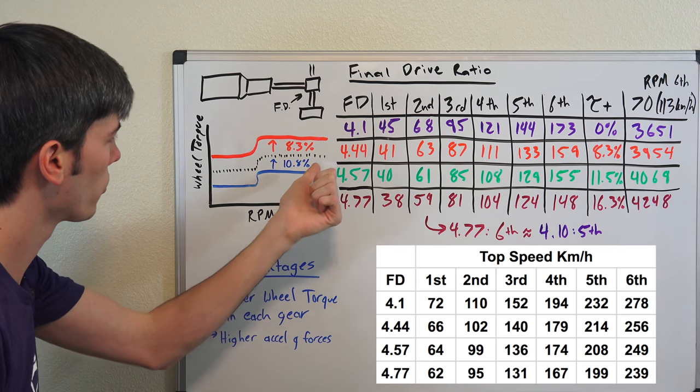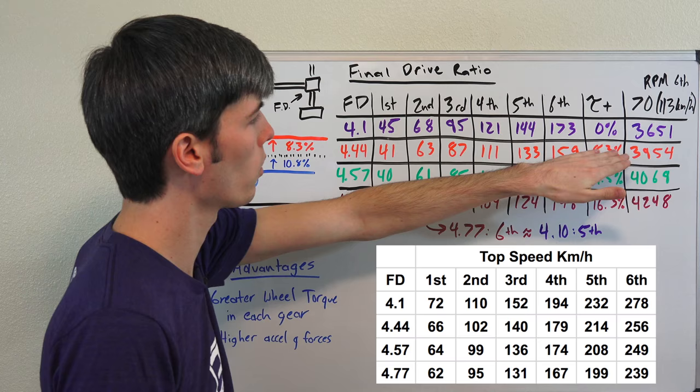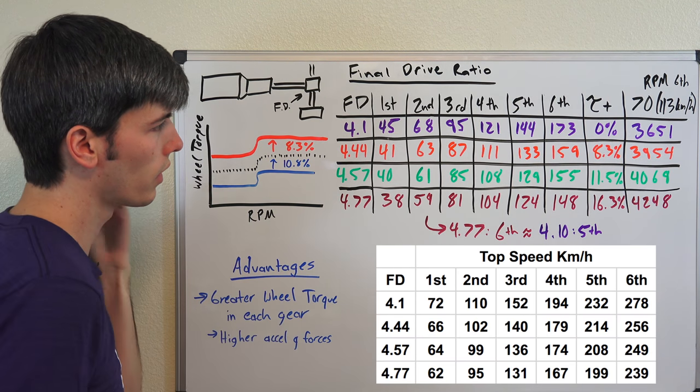So with changing gearing what you're always doing is you're sacrificing either torque for top speed or you're sacrificing top speed for more torque. And so this gear ratio here using this 4.44, you're going to feel more G's in whichever gear you're in.